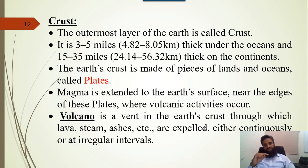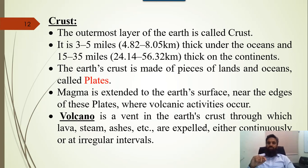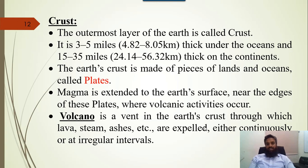The crust is the outermost layer of the earth, 3 to 5 miles (4.82 to 8 km) thick around the oceans, and 15 to 35 miles (24 to 56 km) thick on the continents. The earth's crust is made of pieces of land and ocean called plates. Magma extends to the earth's surface near the edges of the plates where volcanic activity occurs. A volcano is a vent in the earth's crust through which lava, steam, and ash are expelled either continuously or irregularly.